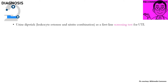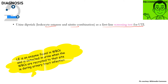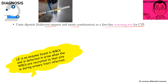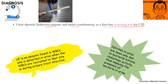For screening, urine dipstick for leukocyte esterase and nitrite are the first line screening tests for UTI. Leukocyte esterase is an enzyme found in WBCs and is detected in urine when WBCs are recruited to the urinary tract in infection. If positive, it suggests the presence of WBCs and is a surrogate marker for UTI. Nitrite is seen only due to bacterial nitrate reductase activity, so if nitrite is present in the urine it implies bacteria are also present, suggesting urinary tract infection.